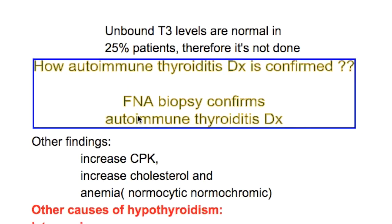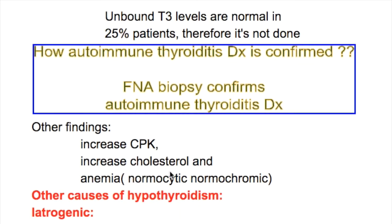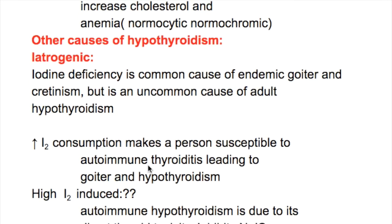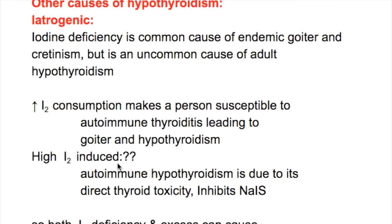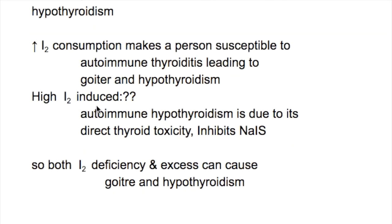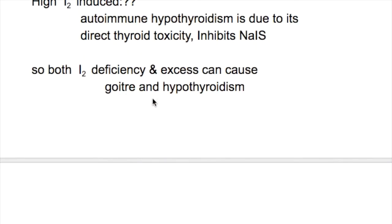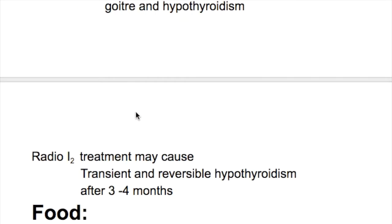How is autoimmune thyroiditis diagnosis confirmed? FNA biopsy confirms the diagnosis of autoimmune thyroiditis. Other findings include increased CPK, increased cholesterol, and normocytic normochromic anemia. Increased iodine consumption makes a person susceptible to autoimmune thyroiditis, leading to goiter and hypothyroidism. High iodine-induced autoimmune hypothyroidism is due to its direct toxicity. So both iodine deficiency and excess can cause goiter and hypothyroidism.